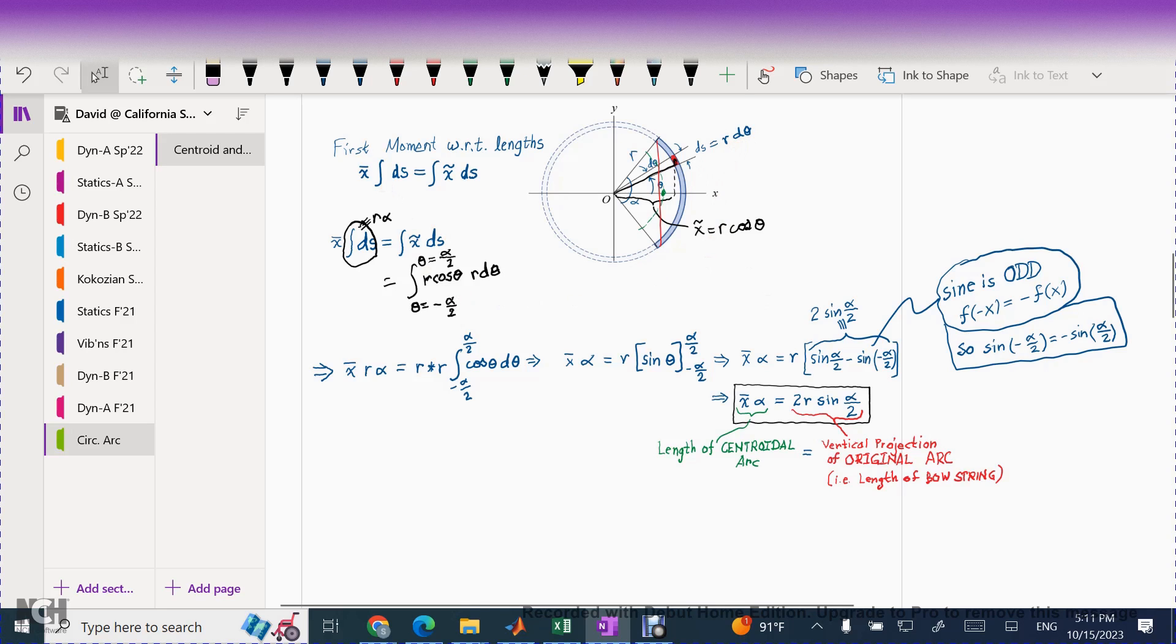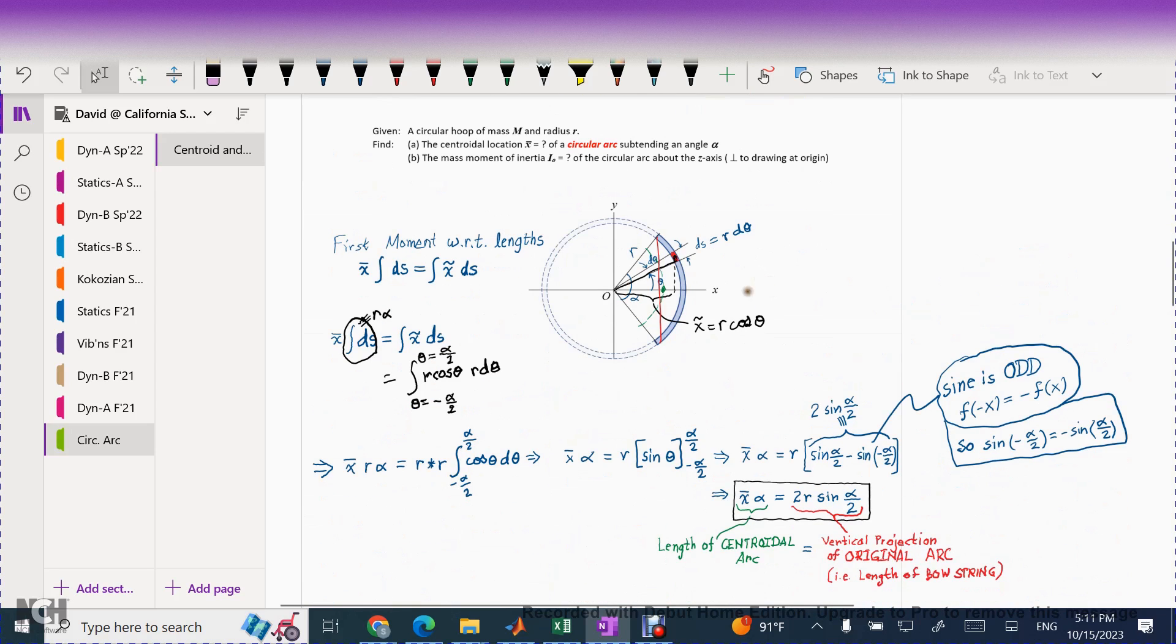I'm going to do this problem using first moment with respect to lengths. And here's that formula. It's x bar times the integral ds equals integral of x tilde times ds. Obviously, the integral of ds is nothing other than the arc length of this portion of the hoop. And again, going back to the same formula, we know that it's going to be r times alpha. x tilde is the location, the x location of the centroid of this little red patch. And you'll notice that it's adjacent to that angle of theta. That is to say it's the cosine portion. So x tilde is literally r times cosine of theta. So that's this piece. And then we said that ds is r d theta. Notice that you have two r's on the right. You have one r on the left. And so one of these r's on the right are going to drop out.